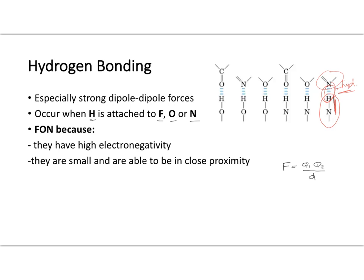The reason why F, O, or N with hydrogen attached form these special types of bonds is that they have relatively high electronegativities and a small size. High electronegativities lead to a relatively large dipole moment, so hydrogen gets a partial positive charge while partial negatives show up on the F, O, and N atoms. Because hydrogen is such a small atom, molecules are able to get into close proximity with one another, resulting in very close charge interactions.